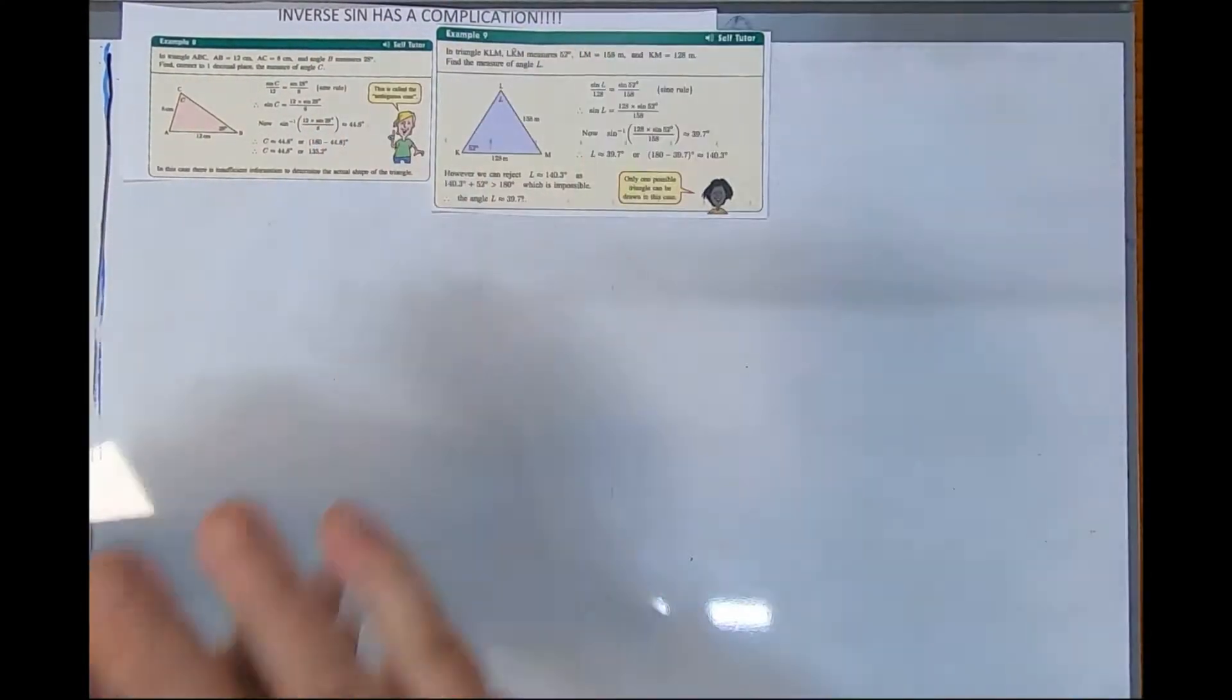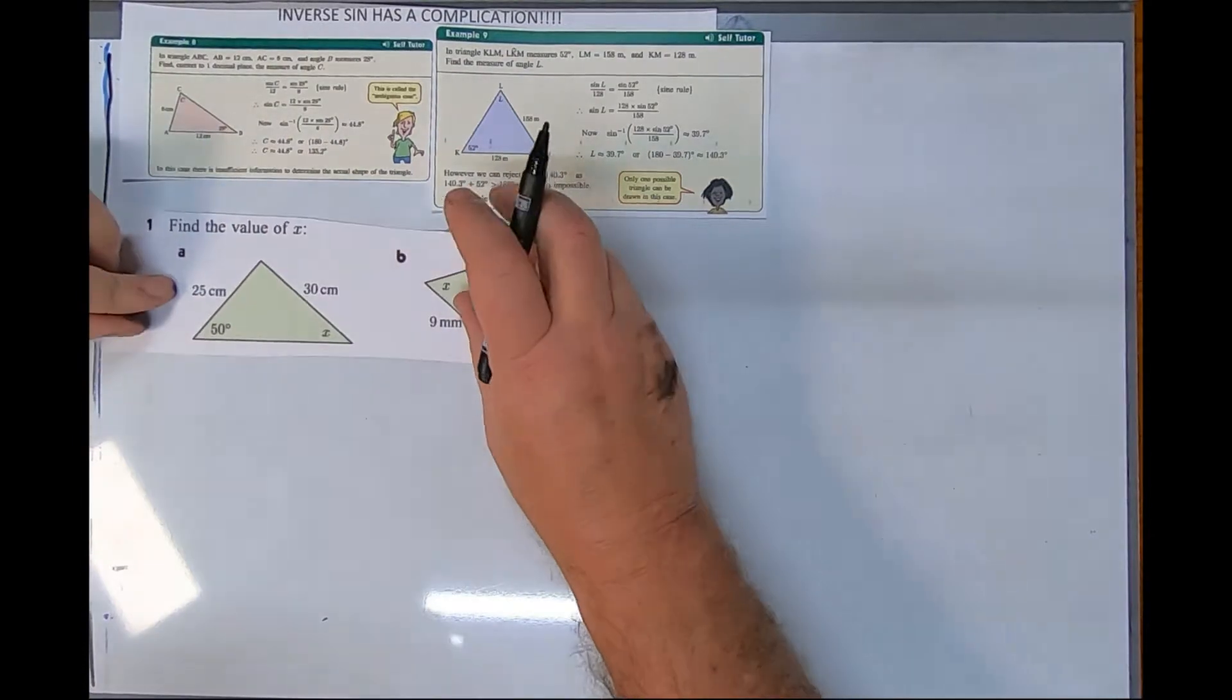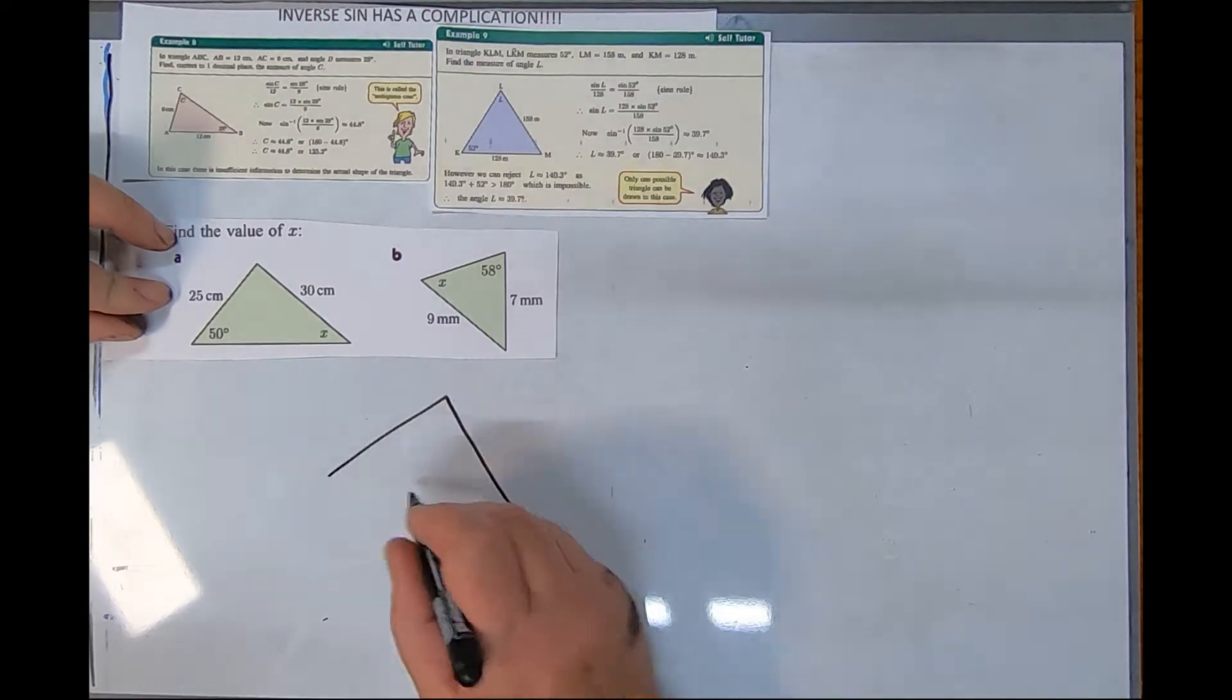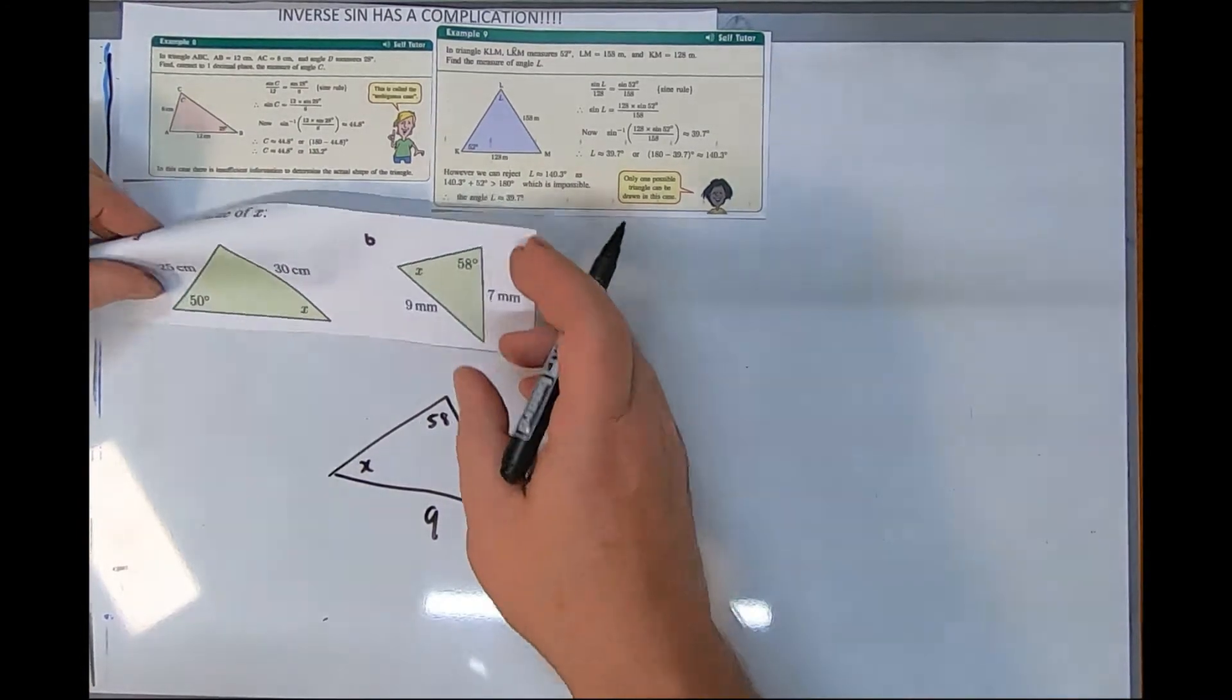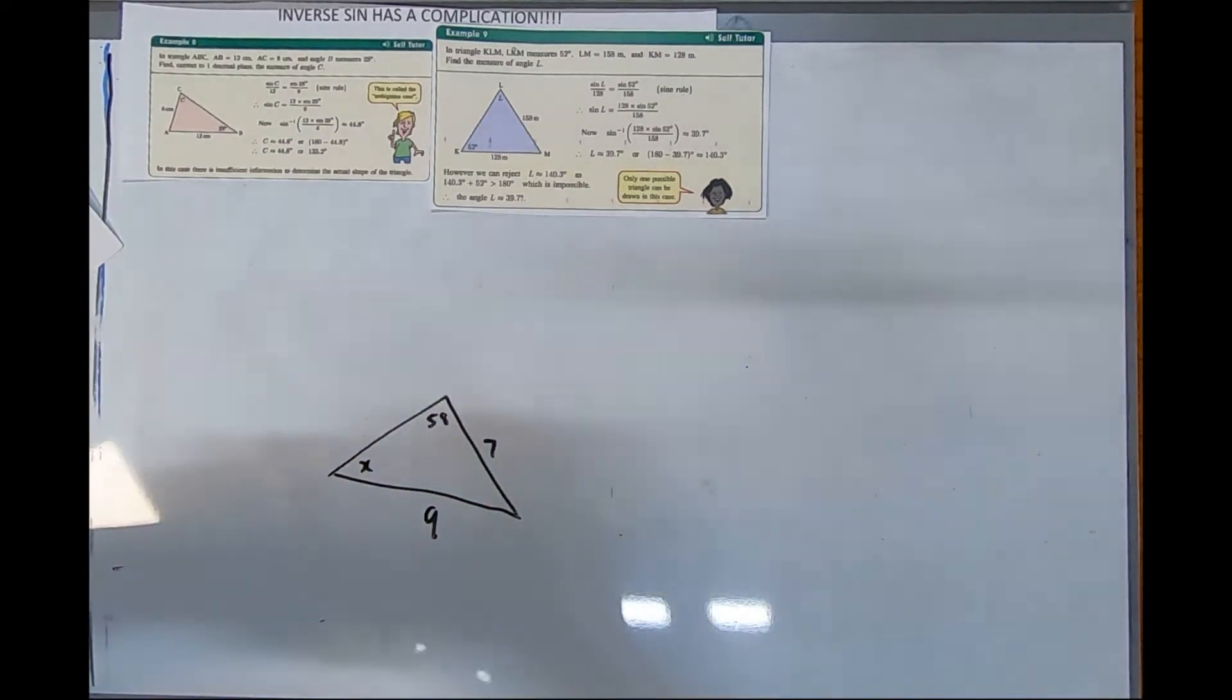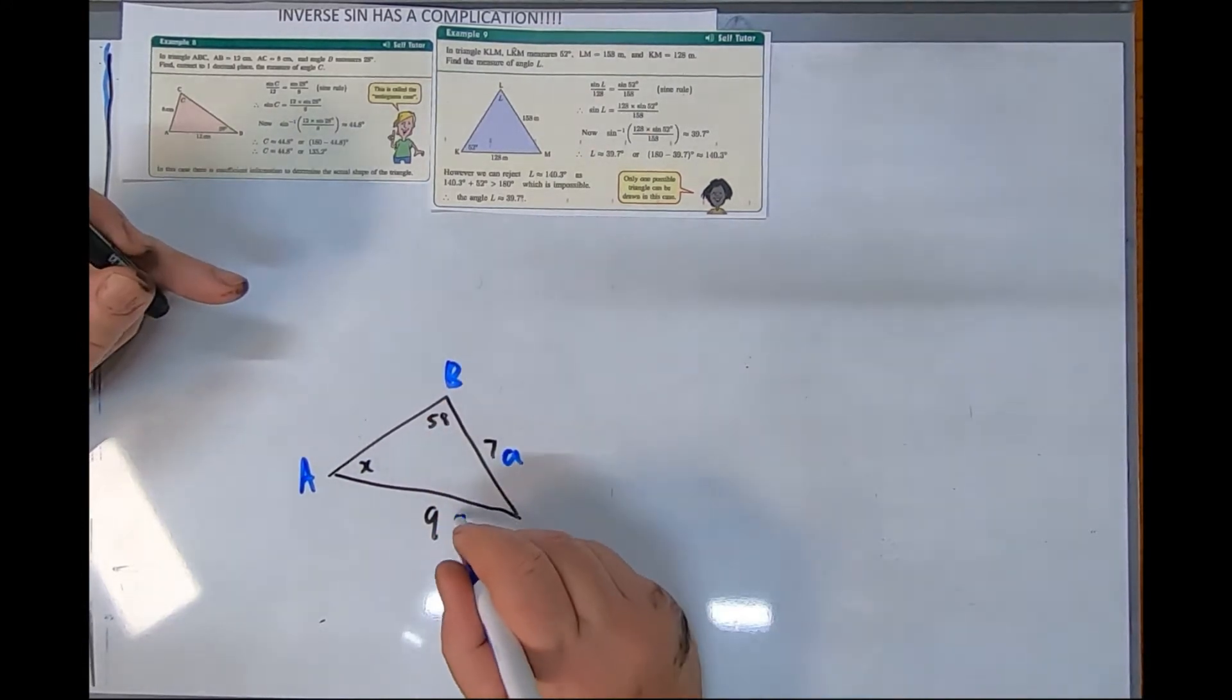Here we are looking at inverse sine. We just did a question along these lines, so let's have a go at this one. I've got my triangle with X, 58 degrees, 7, and 9. I can see two sides and two angles, so I'm going to label this with my non-right angle triangle system.